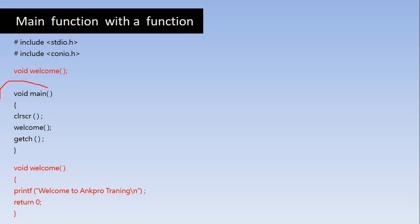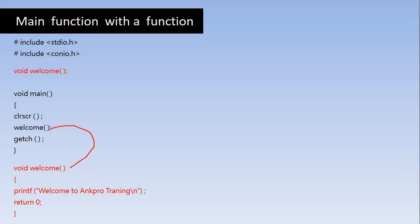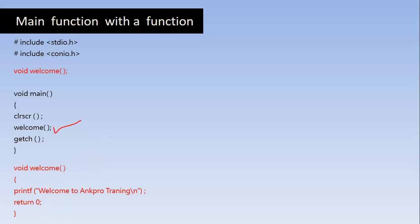This is the main function where the function call lies. Whenever the control comes to this point it will jump to the statement where the definition is and execute the entire code. This is the function call, also called the calling function. Today we are going to perform this practically so you will understand exactly how the function works.